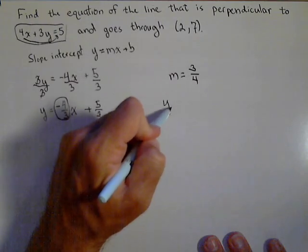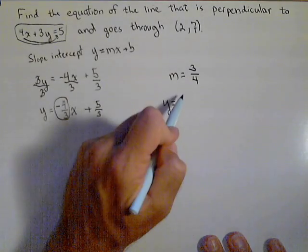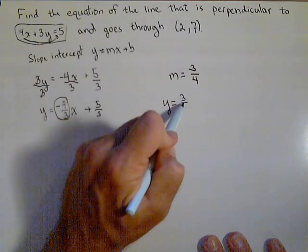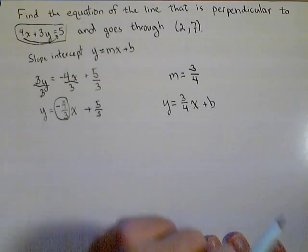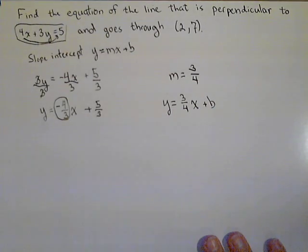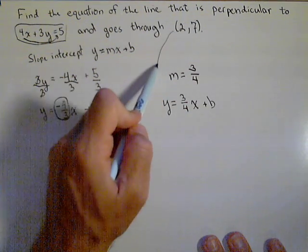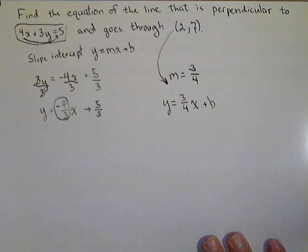Now that we know the slope, let's plug that into our slope-intercept form. 3 fourths x plus b. All we need is b, and we're done. Once we know the slope, it's just a matter of plugging our point in to solve for b.